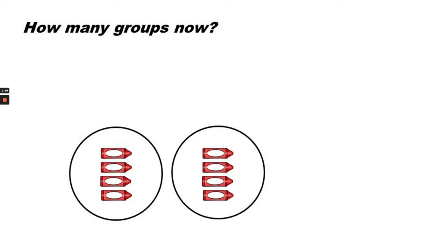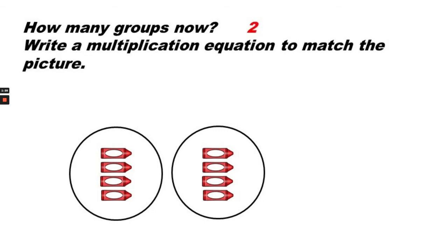How many groups do you see now? We took away one group so now there are only two groups. Let's write a multiplication equation to match the picture now. Two groups of 4 or 2 times 4 equals 8.